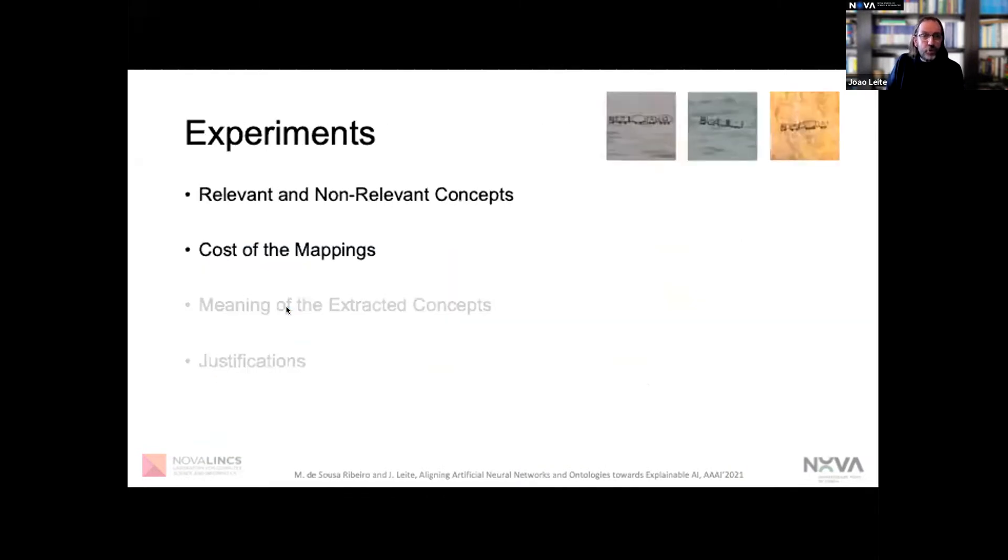Furthermore, we show evidence that using the internal activations of the neural network when extracting those concepts is better than if we were training new networks altogether from the original data to extract those concepts. This shows that these concepts are really encoded in the internal state of the neural network.